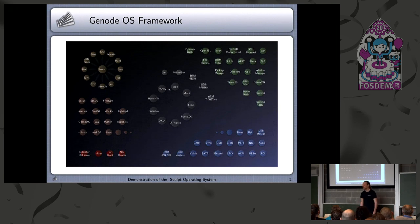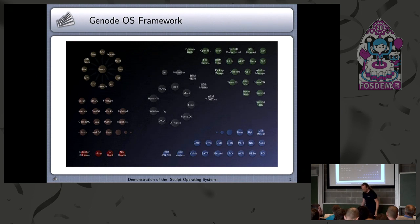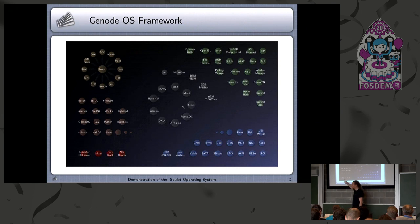The Nova kernel is supported as well. There are even some nostalgic kernels supported — we still support the Fiasco kernel from 12 years ago, just for nostalgic reasons. It also supports the Linux kernel. On top of that there are plenty of components, like these building blocks: colorful stacks, device drivers, multiplexers for physical resources — lots of these components.